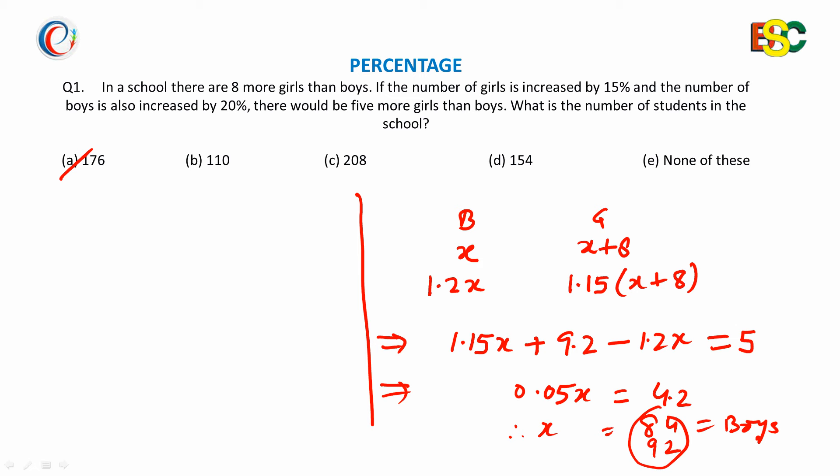Suppose the increase of 15% is in number of boys and girls both. As we have girls minus boys equals 8, if we increase 15% for both boys and girls, then the difference will also increase by 15%. So how much change is there?